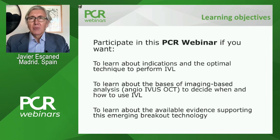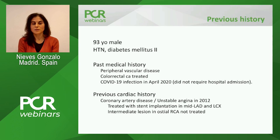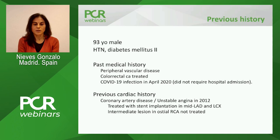I will hand it to Nieves Gonzalo who is going to introduce us to the first case. Our patient is a 93-year-old male with hypertension and diabetes. He had a history of peripheral vascular disease and colorectal cancer that was treated. He had a COVID-19 infection in April 2020 that fortunately did not require hospital admission. Regarding his previous cardiac history, he had coronary artery disease. He was admitted in 2012 for unstable angina and at that time was treated with stent implantation in the LAD and also in the circumflex. He had an intermediate lesion in the right that was not treated at the time.